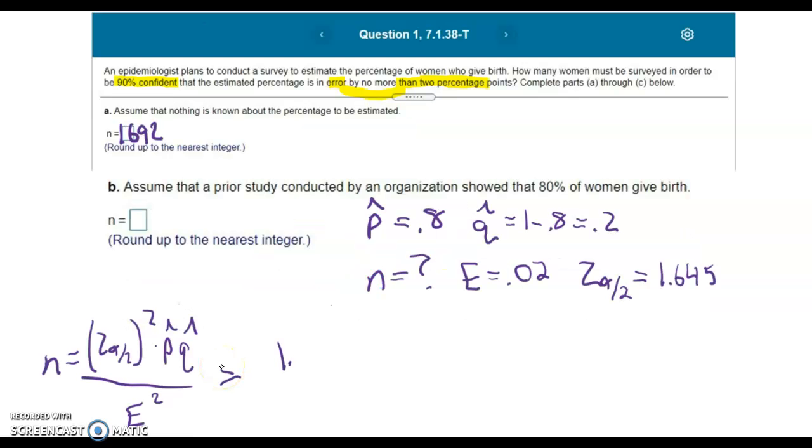We'll fill in 1.645 squared for Z alpha over 2 squared. Then we'll times 0.8 times 0.2 for P hat times Q hat. And then for E squared in the denominator, we'll have 0.02 squared. So put that in your calculator and see what you get.